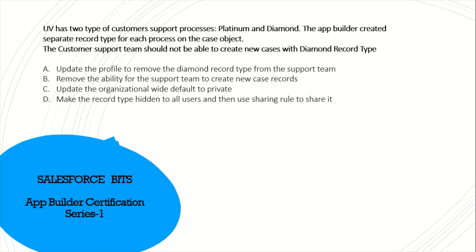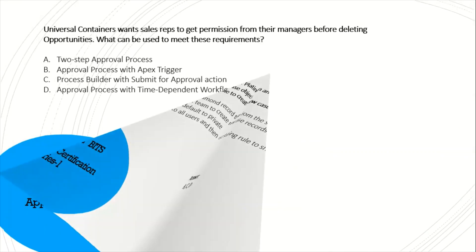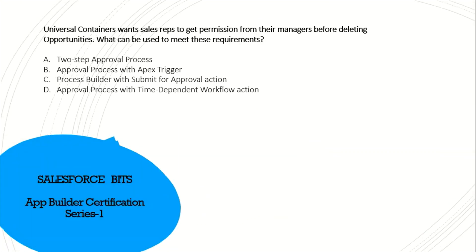Universal Container has two types of customer support processes: Platinum and Diamond. The app builder created separate record types for each on the case object. The support team should not be able to create new cases with the Diamond record type. To achieve this: update the profile to remove the Diamond record type from the support team — yes. Removing the ability to create cases entirely is not a valid option. Update the org default to private and use sharing rules — possible. So the correct answers are A, C, and D.